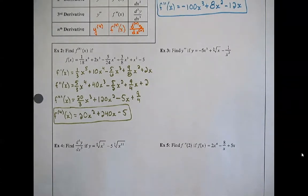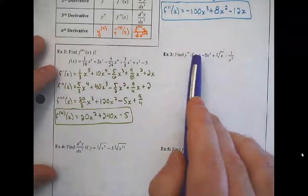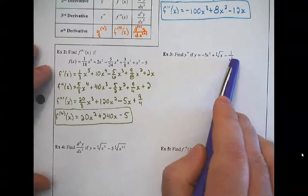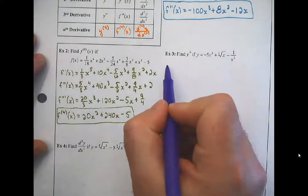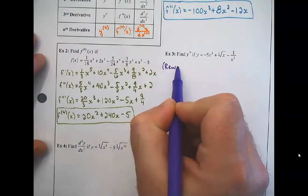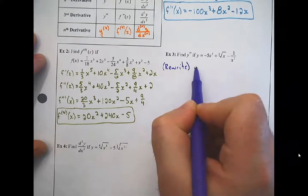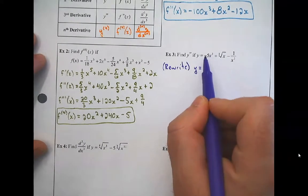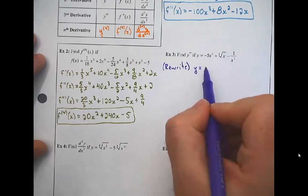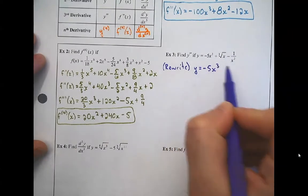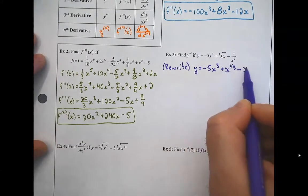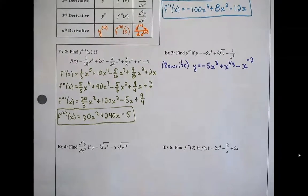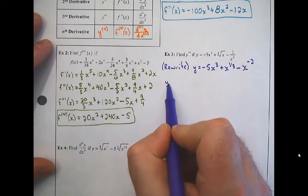Now let's get into an important detail — what happens when we can't just start taking derivatives right away. We need to do what's called a rewrite first. If a function is not set up for the power rule, we rewrite before deriving. Remember: the rewrite is not the derivative — it's still the original function y. Rewrite it so you don't have roots and don't have x's in the denominator. Convert a cube root to an exponent of one-third, and move x from the denominator to the numerator with a negative exponent.